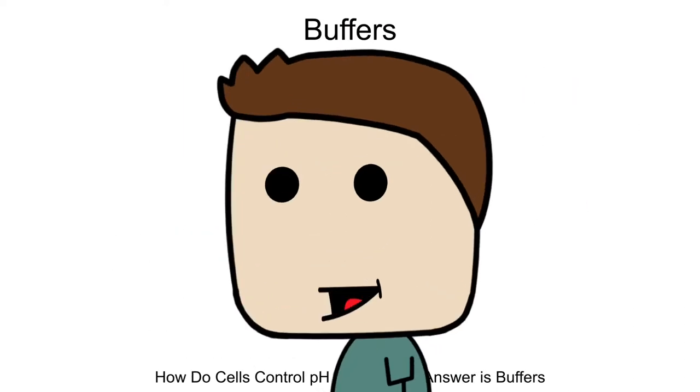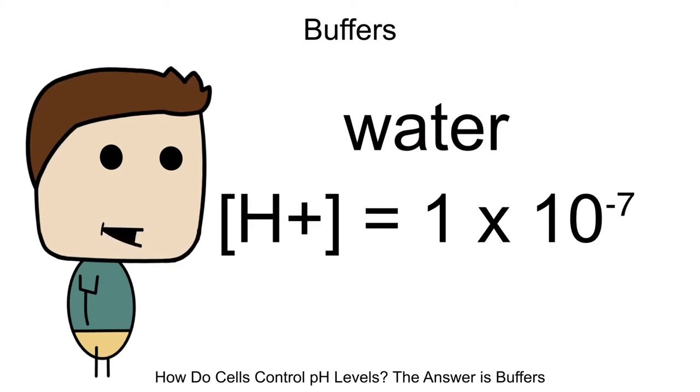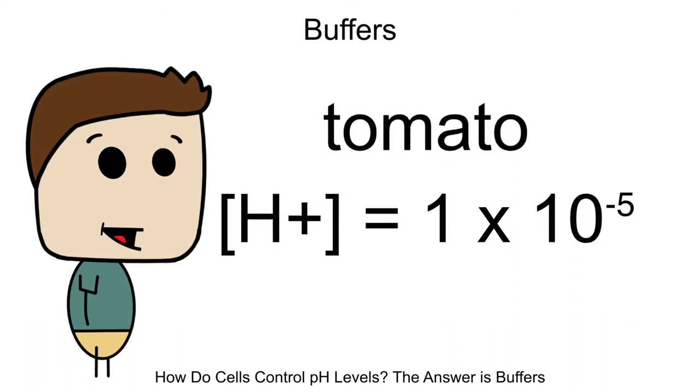But do you want to know something really crazy? We eat, drink, and take in so many things of various pH levels. As you know from my last video, water has an H concentration of 1 times 10 to the negative 7. But did you know that straight coffee is around 1 times 10 to the negative 5? Get this, tomato is 1 times 10 to the negative 4. Now compared to the other two I mentioned, tomatoes are the most acidic.